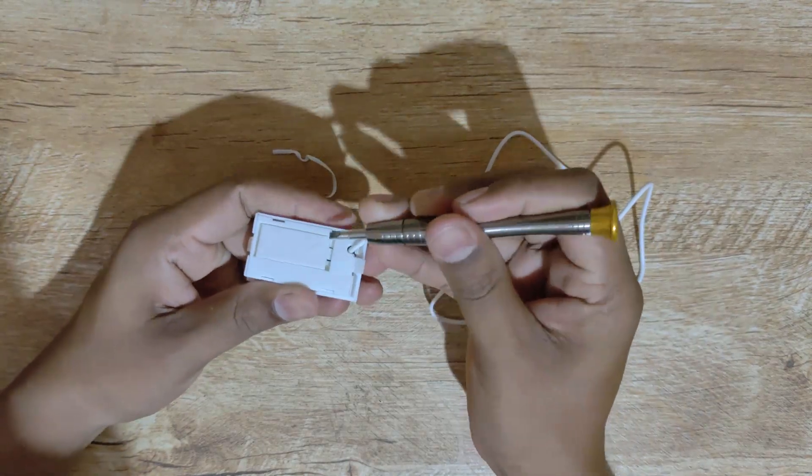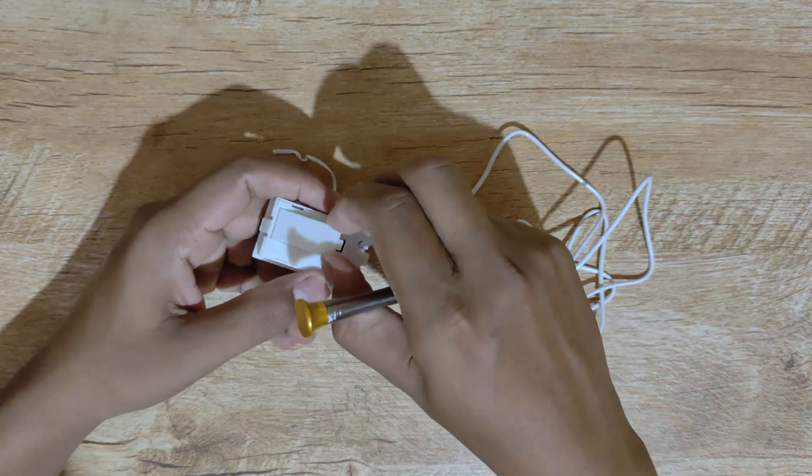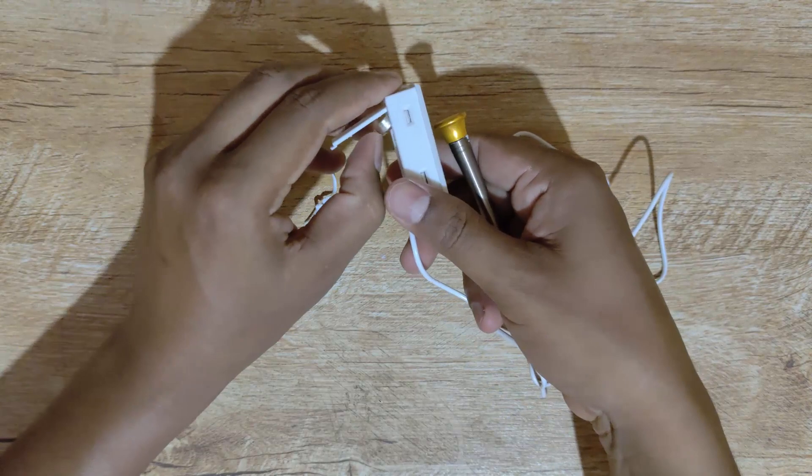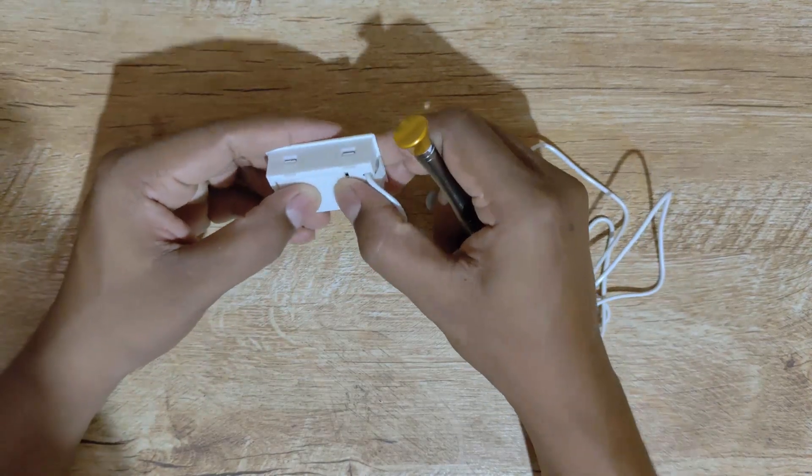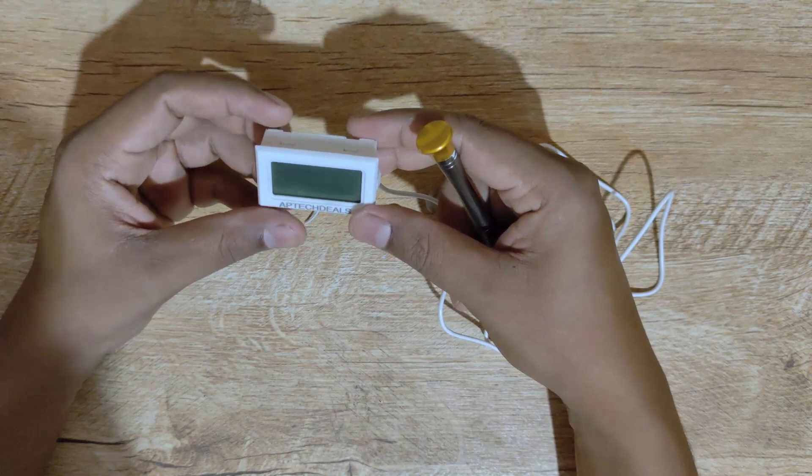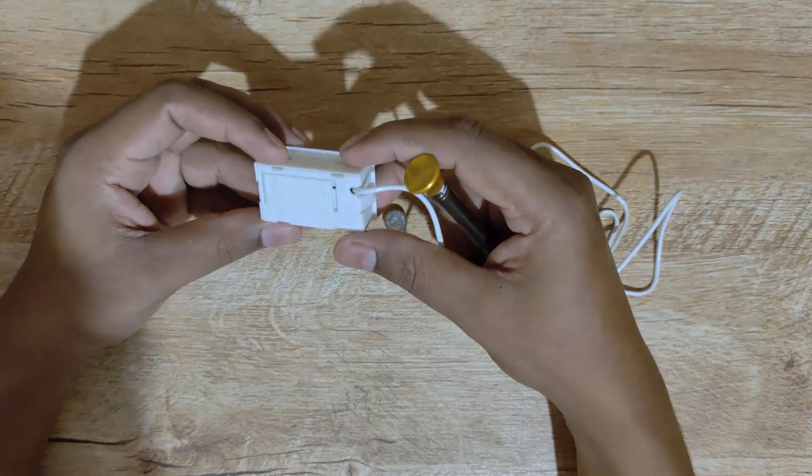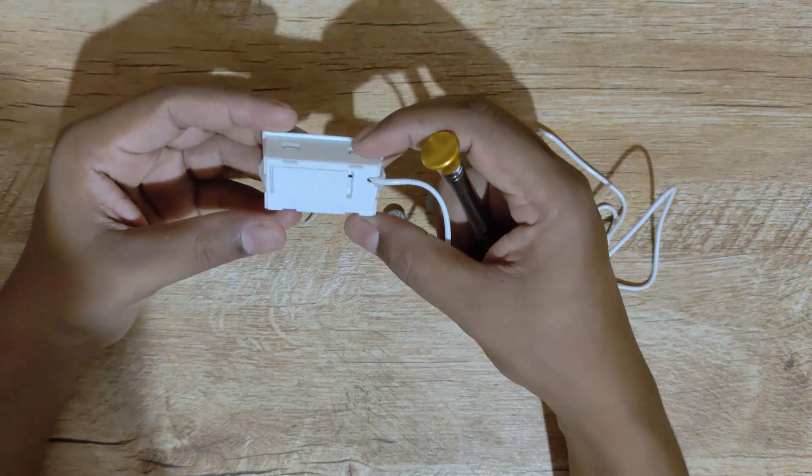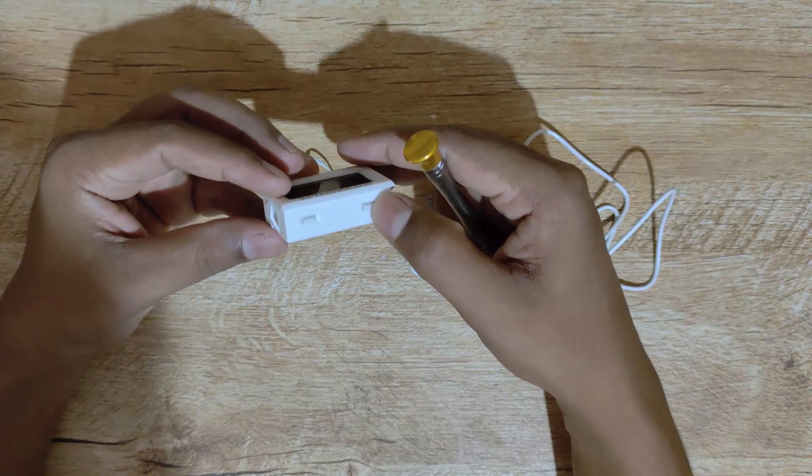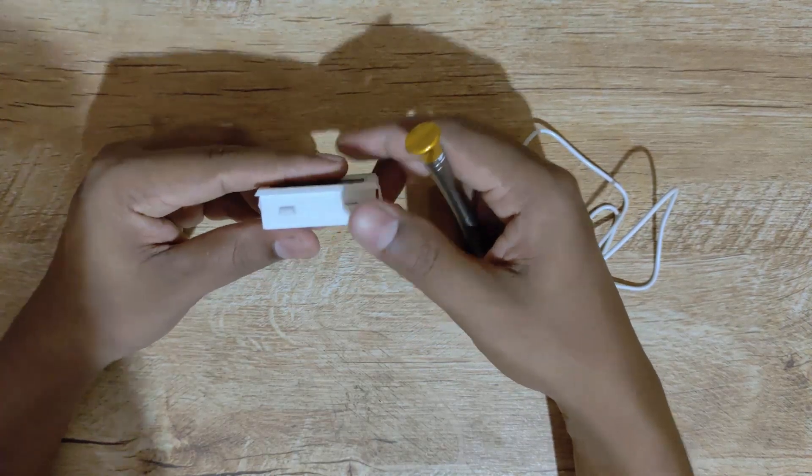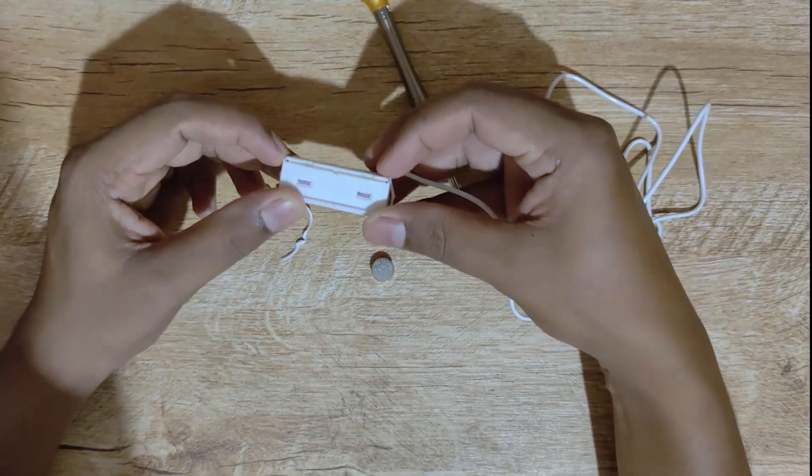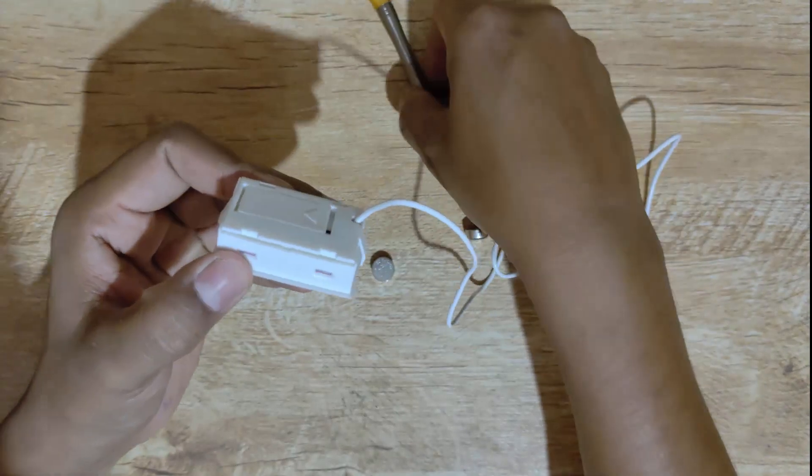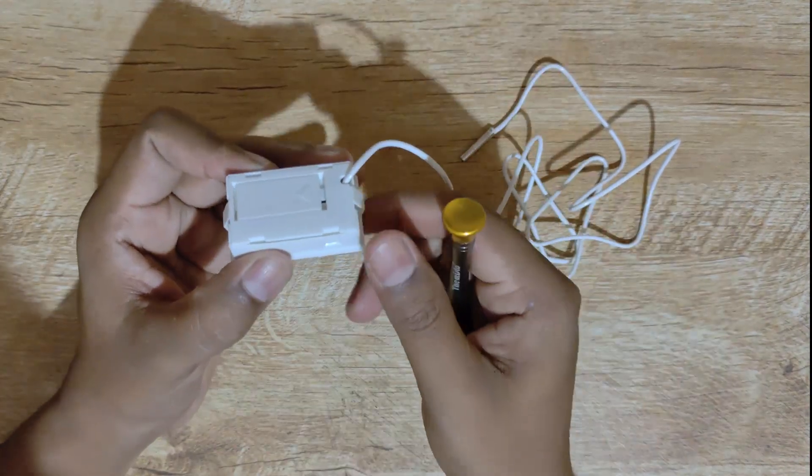Here there are no fasteners provided, they have given only the snaps. So let's try to remove the snaps. As you can see, we have almost opened it. Now we need to do the same for the other side.